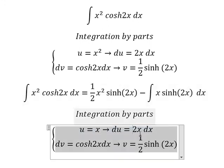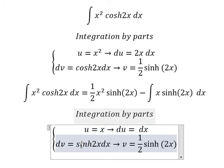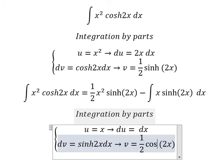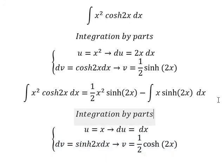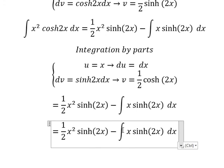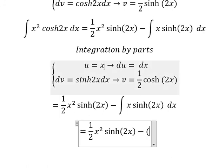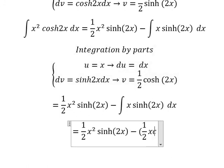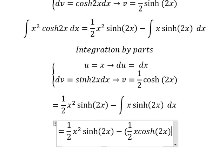du equals dx, and dv equals sinh(2x)dx. The integral of this one, you have v equals 1/2 cosh(2x). So for this one we have u multiplied by v minus the integral of v multiplied by du.